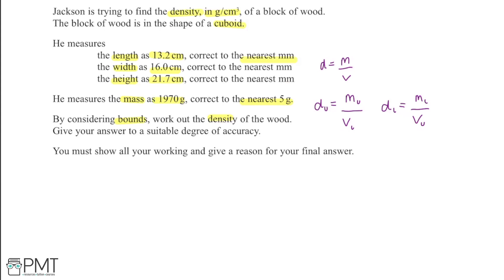Starting with mass: he measures 1970 grams correct to the nearest 5 grams. We divide 5 by 2 to get 2.5, then go 2.5 above and below 1970. So the upper bound for mass is 1970 + 2.5 = 1972.5 grams, and the lower bound is 1970 − 2.5 = 1967.5 grams.